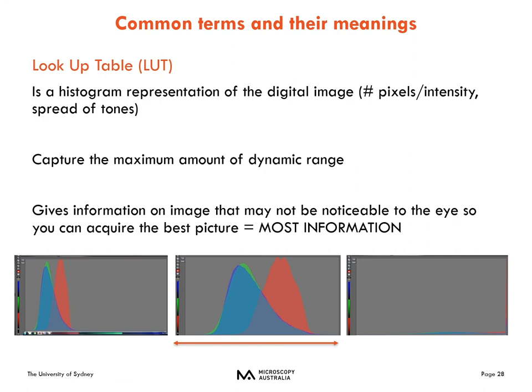The next common term is your lookup table or LUT — basically a histogram that represents the digital image: the number of pixels and the intensity of that spread of tone. When you have your lookup table selected, you want to capture the maximum amount of the dynamic range — how much of those pixels the camera will actually capture. This gives you information that may not be noticeable to the eye so that you can acquire the best picture. Always select your lookup table to check you are capturing the maximum dynamic range, which will give you the most information about that image.